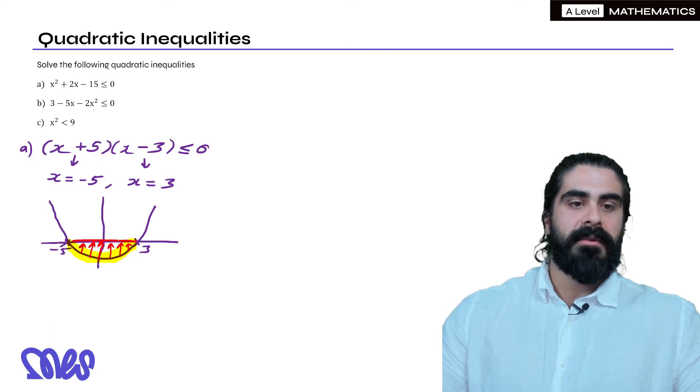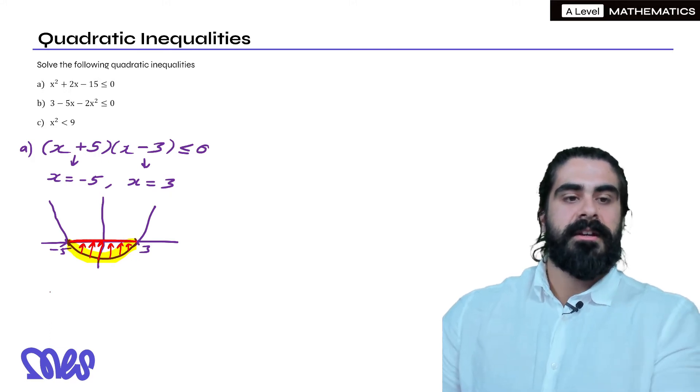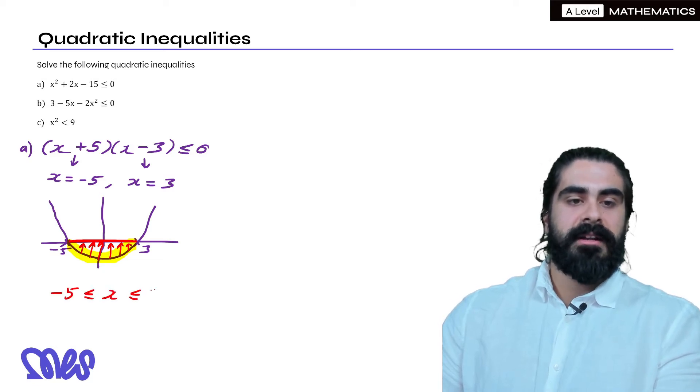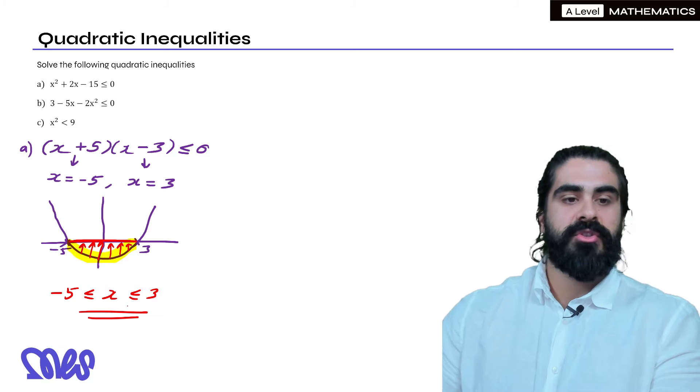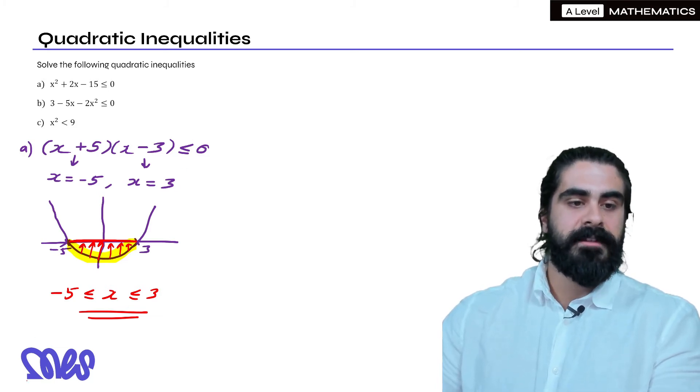So it's any number between minus 5 and 3. So your solution here is any solution between minus 5 and 3, and make sure you have the equal to sign because in the question it's equal to as well.